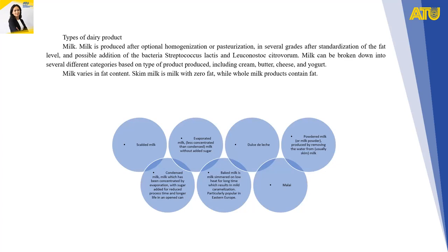Types of dairy products — Milk. Milk is produced after optional homogenization or pasteurization in several grades after standardization of fat level and possible addition of the bacteria Streptococcus lactis and Leuconostoc citrovorum. Milk can be broken down into several different categories based on type of production, including cream, butter, cheese, infant formula, and yogurt. Milk varies in fat content: skim milk is milk with zero fat, while whole milk products contain fat.